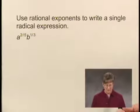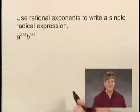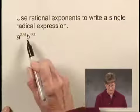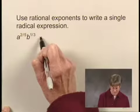Now the first thing that we want to do is to rewrite these rational exponents so that they have a common denominator, and the least common denominator would be 15. So I'm going to rewrite each of these with a denominator of 15.